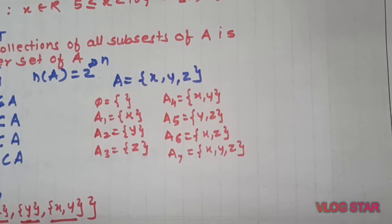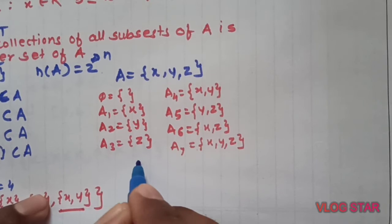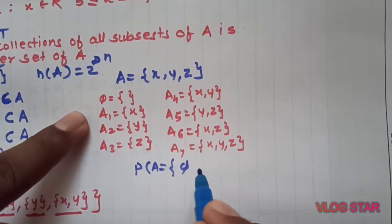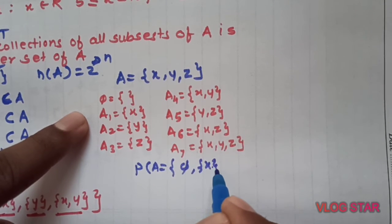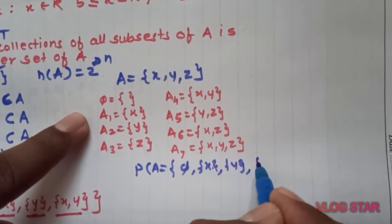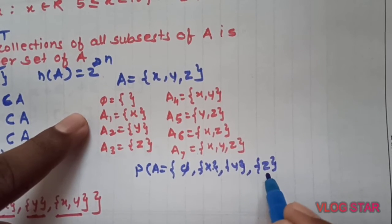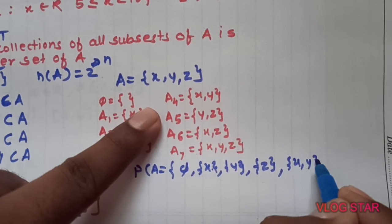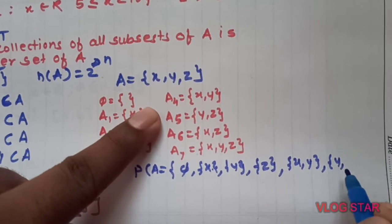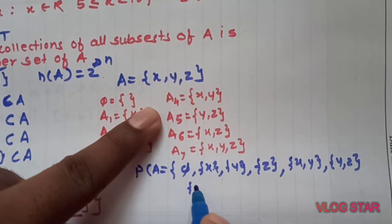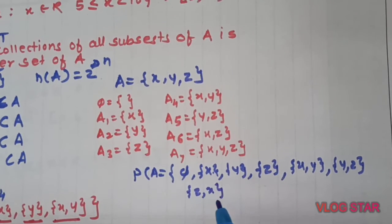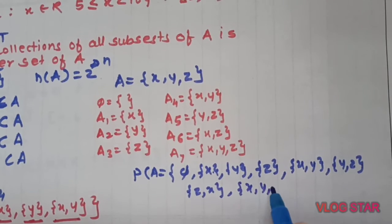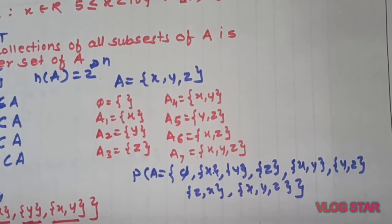What is the power set? Power set of A which contains 8 elements. First element is empty set phi, then x, then y, set z, then x y, then y z, then z x or x z, and then x y z. This is your power set.